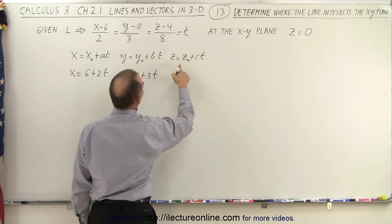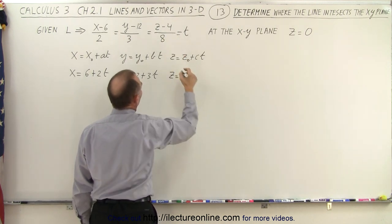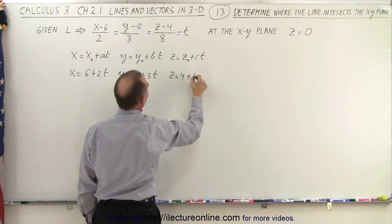And z equals z sub 0, so z equals 4 because z sub 0 is 4, plus c, which is 8t.